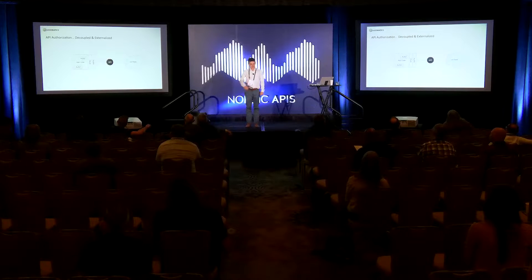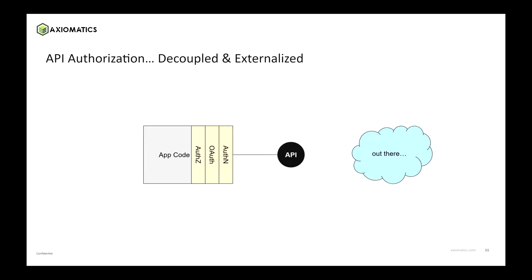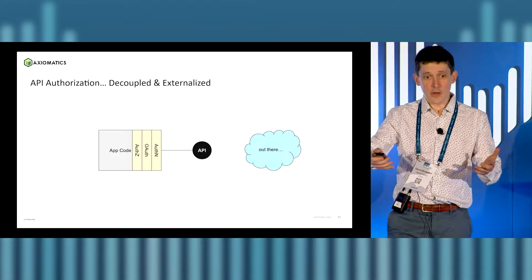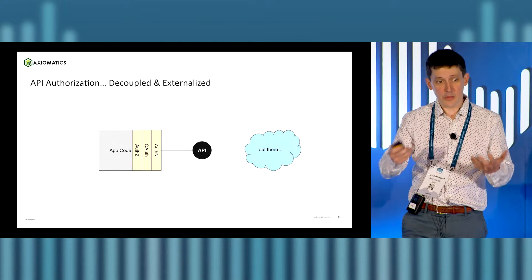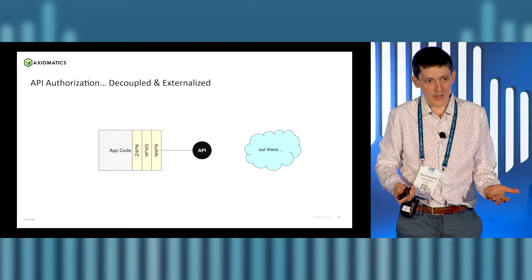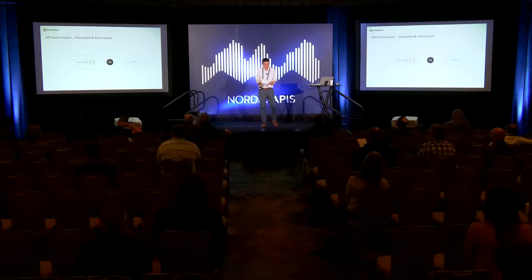What you really want to do is get rid of that code and add in a new layer for authorization specifically. You want to decouple and externalize authorization. You have Curity for authentication and many other products for identity management. Just do the same thing for authorization. Even if it's a homegrown system, it's still better than baking it into the app.